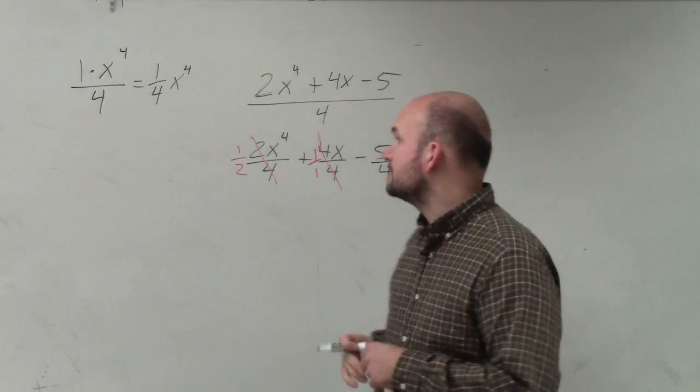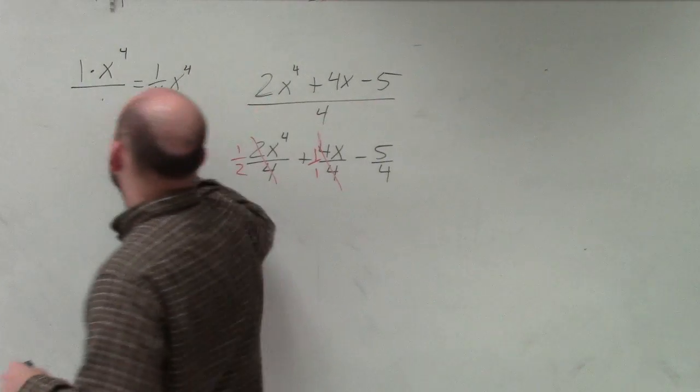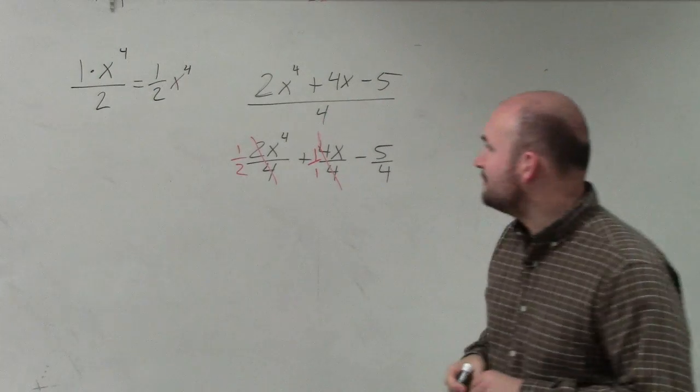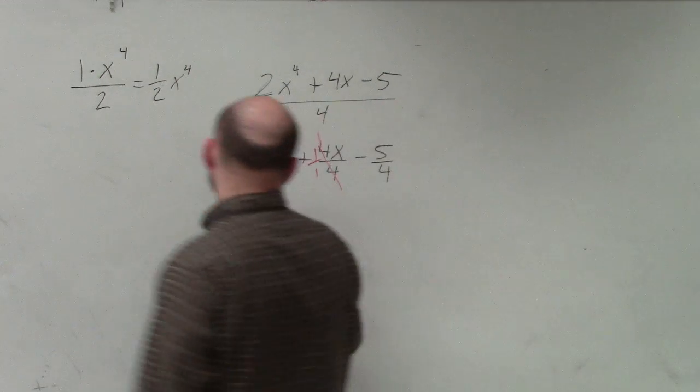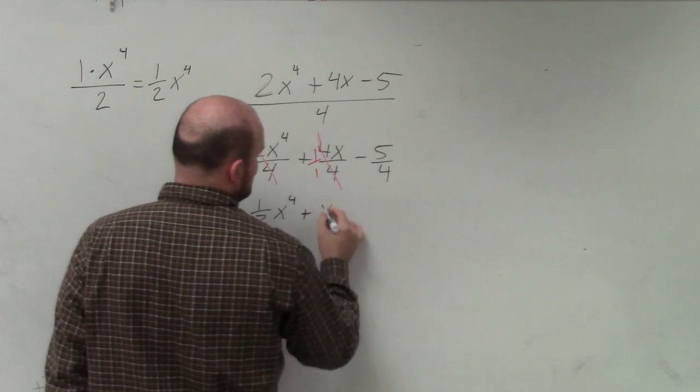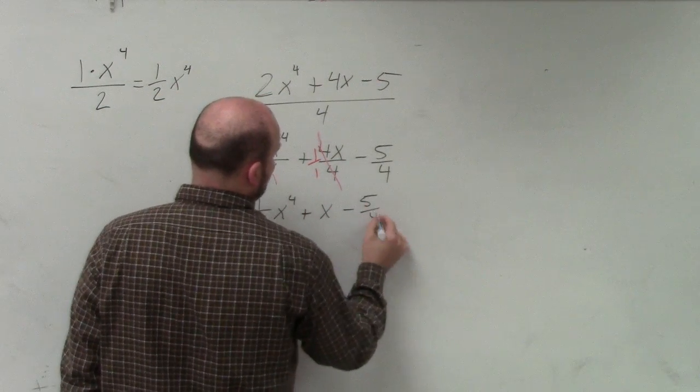I don't know, it should be a 2, right? So if I was going to write this out, I would write this as 1 half x to the 4th plus, this is 1 over 1, so that's just going to be x minus 5 over 4.